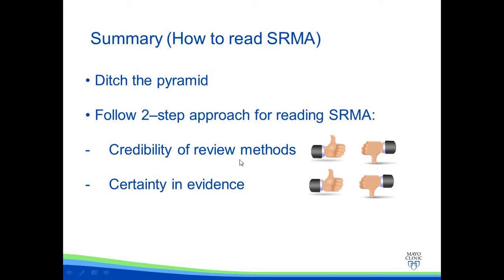In summary today, we talked about several advanced concepts: risk of bias assessment, heterogeneity, fixed and random effects, publication bias, the Proteus phenomenon, and network meta-analysis. We also talked about the user's guide on how to consume a systematic review and meta-analysis — consume meaning to understand, read, apply, use in practice, in a guideline, or in any way. The most challenging concept will probably be fixed versus random effects — remember that random effect is the one to use most of the time.